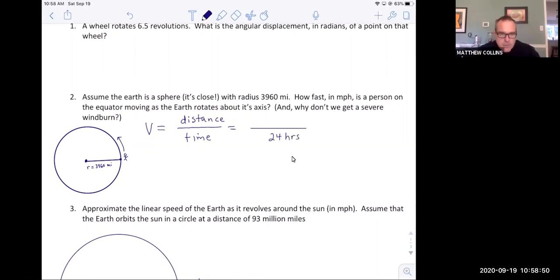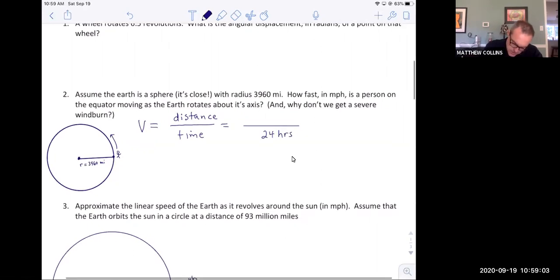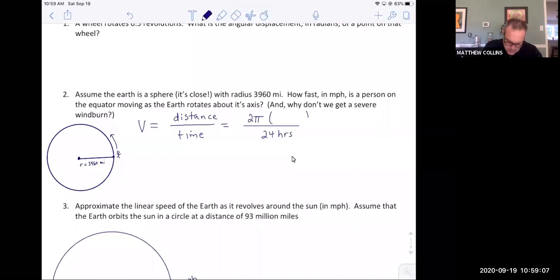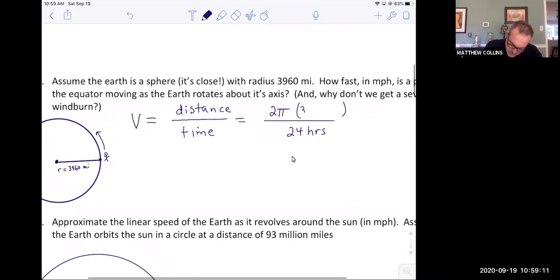What distance does he cover? Well, he covers the circumference. The earth, if you think of it as a big circle, the big circle of the equator. The distance is just the circumference. What's the circumference? It's 2πr. Well, what's r? It's the radius of the earth. It's 3960 miles.